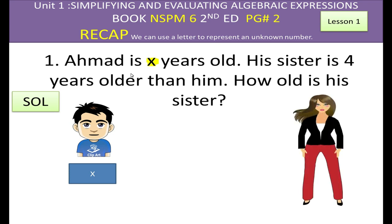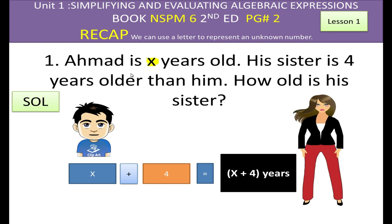We need to add four years to the age of Ahmed. So we add four years to x, and this will be equal to the age of his sister. His sister's age is x plus four years. So this is done.